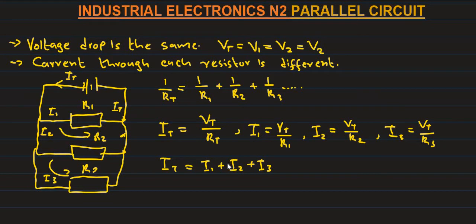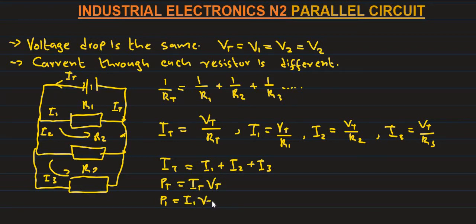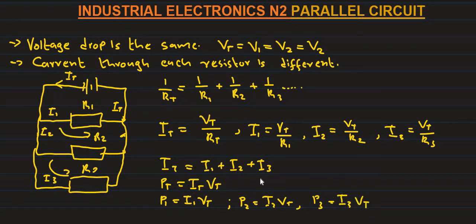Now we calculate power. Power total equals I total multiplied by V total. Power through resistor 1: P1 equals I1 multiplied by V total. Since voltage is the same, P2 equals I2 multiplied by V total. Power resistor 3: P3 equals I3 multiplied by V total. And P total equals P1 plus P2 plus P3.